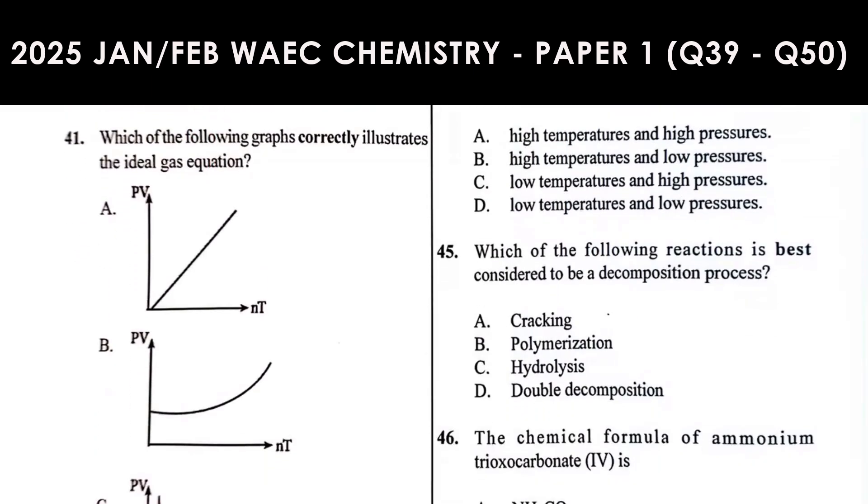Question 41: Which of the following graphs correctly illustrates the ideal gas equation? The ideal gas equation says PV equals NRT. We are plotting a graph of PV against NT. If we rearrange this equation, it means that PV is directly proportional to NT, which is PV over NT equals R, a constant, the molar gas constant.